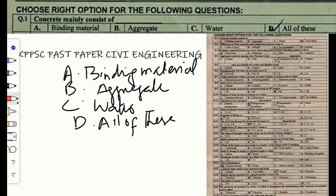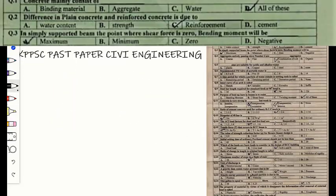Concrete mainly consists of a binding material — that is cement used in concreting — so option A is correct. The aggregate, both fine and coarse, is also used in concrete, so option B is also correct. Water is required to wet the surface of aggregate, so option C is also correct. Therefore, option D — all of these — is the correct answer.